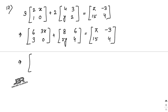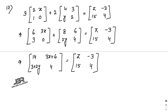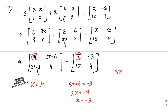Now compare both matrices. 14 = z, so z = 14. Then 3x + 6 = -3, so 3x = -9, giving x = -3. And 3 + 2y = 15, so 2y = 12, giving y = 6. Therefore x = -3, y = 6, and z = 14.